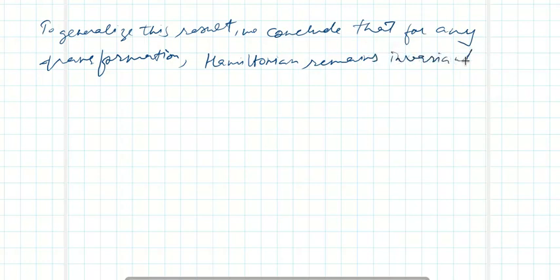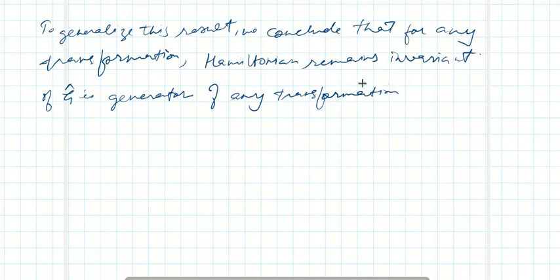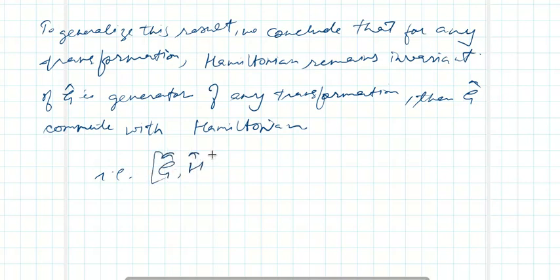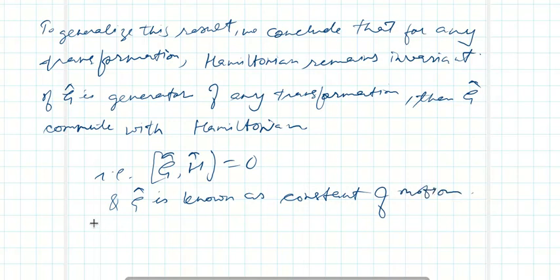If G is the generator of any transformation, then G commutes with the Hamiltonian. That is, the commutator of G and H will be zero. Here, this G is known as a constant of motion under such a situation.